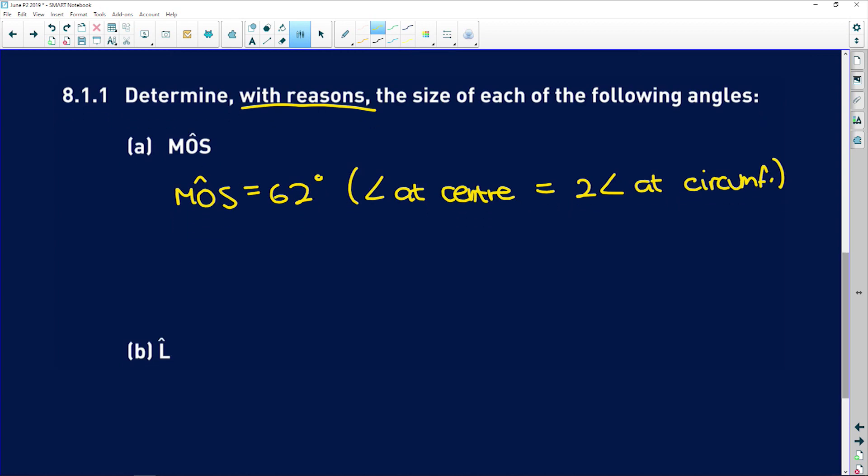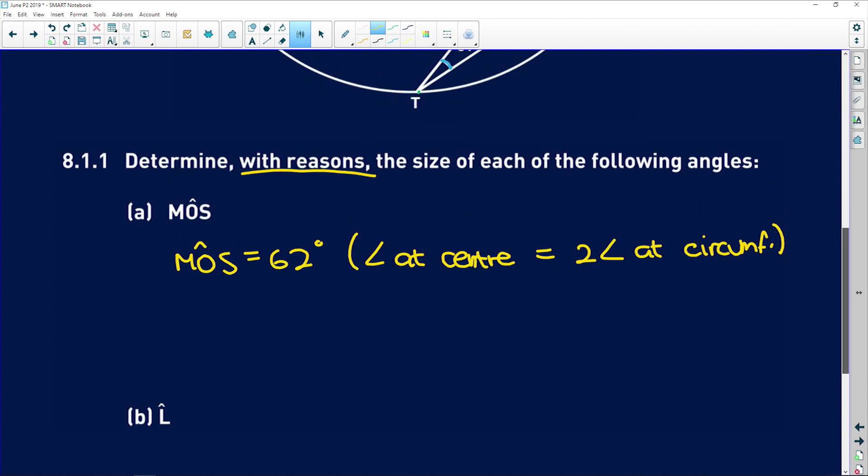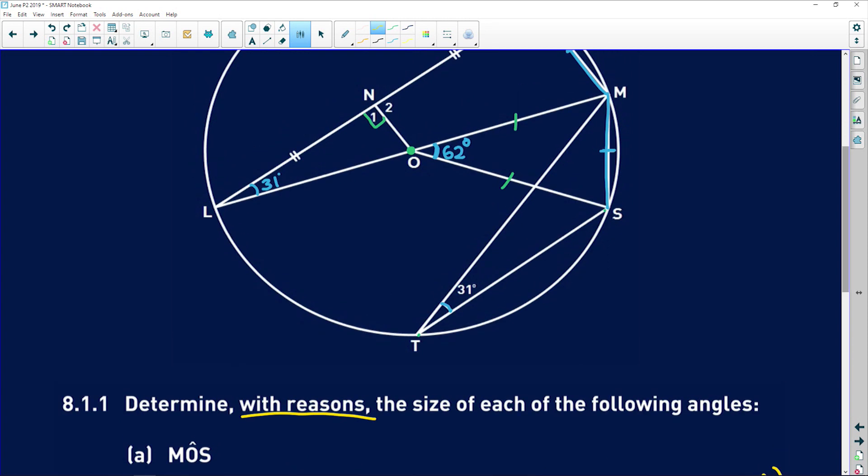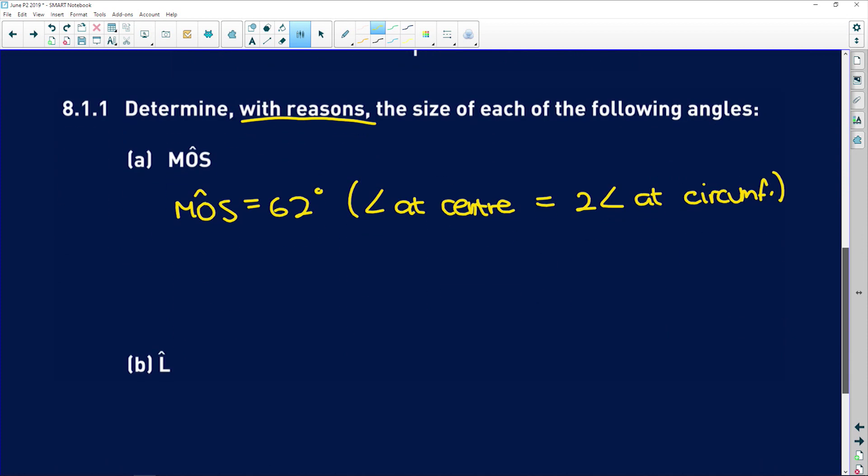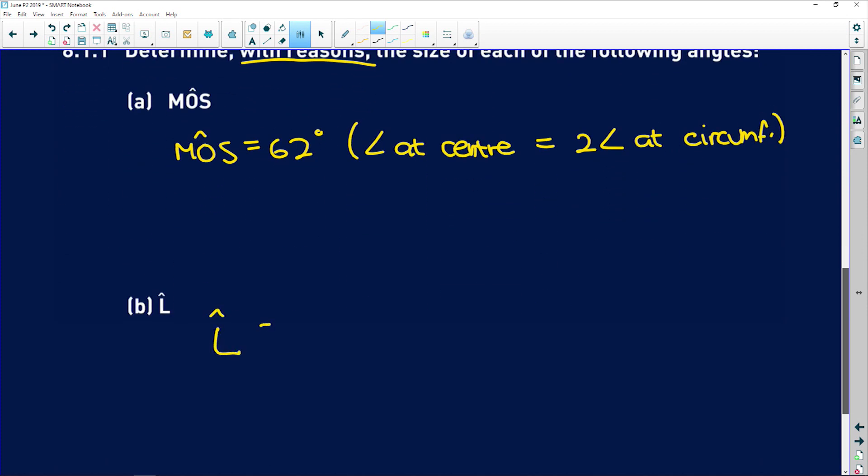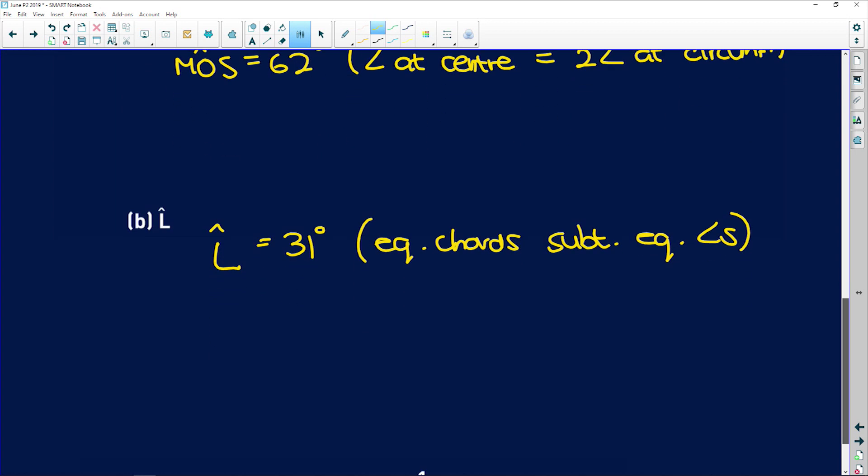B says determine the size of L with reasons. Angle L. Ha, you see guys, we've already filled this in. Angle L is equal to 31 degrees. Because equal chords subtend equal angles. Very easy.